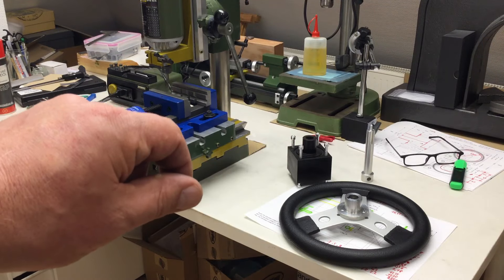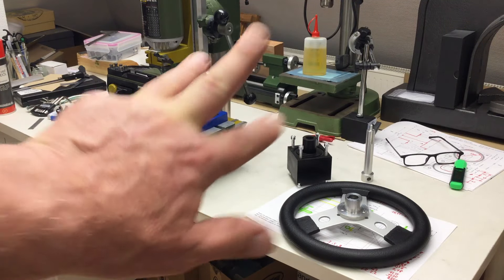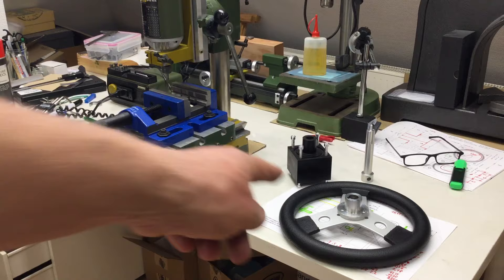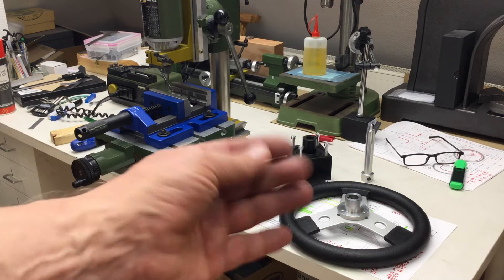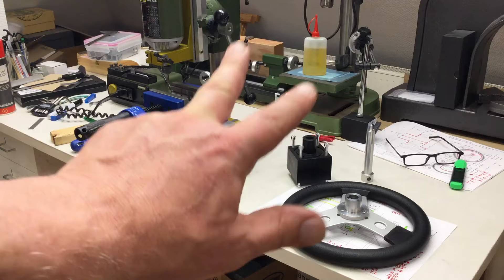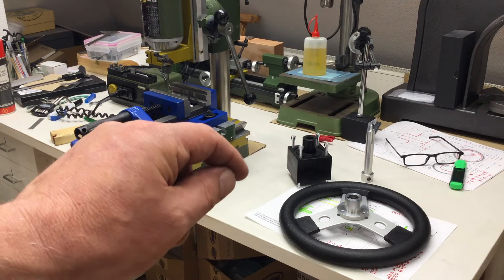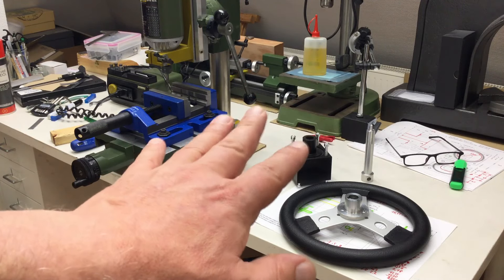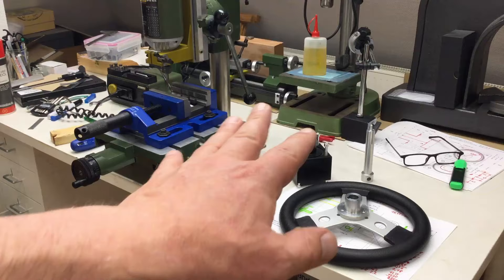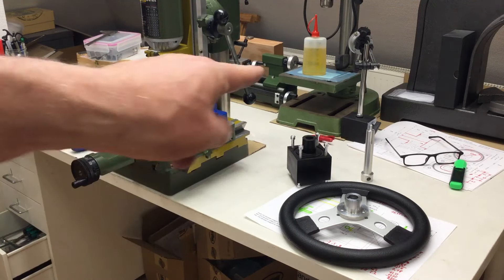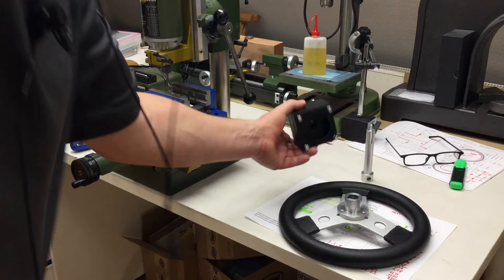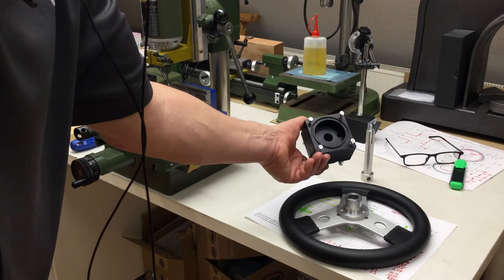That's it for today. Four parts finished, well I bought the wheel and just put another hole into its center so let's say three and a half parts finished. The rest should be easy sailing.